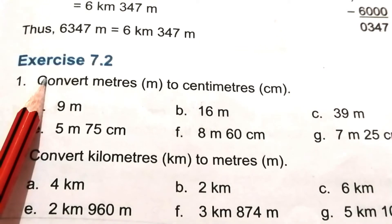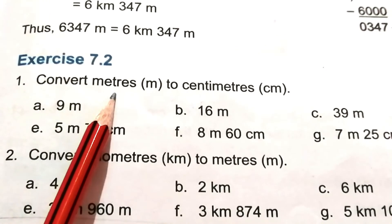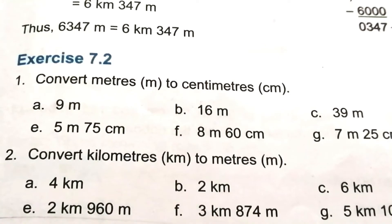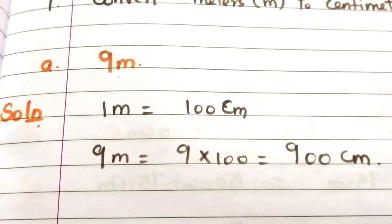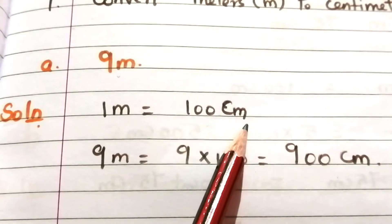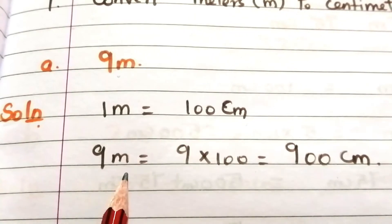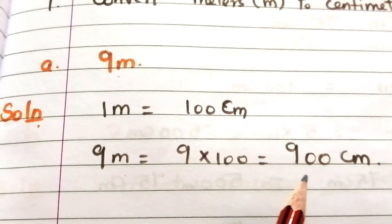Now we are going to solve Exercise 7.01 — convert meters to centimeters. Problem A: 9 meters. We know 1 meter equals 100 centimeters, so 9 meters equals 9 × 100 = 900 centimeters.